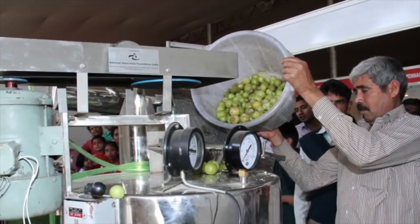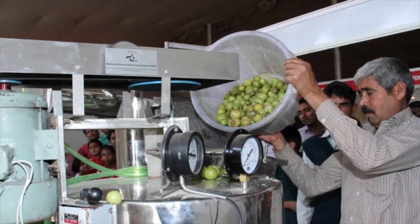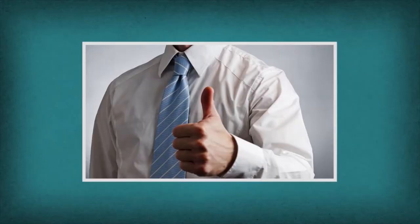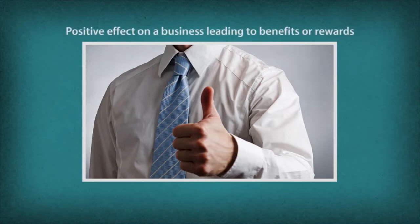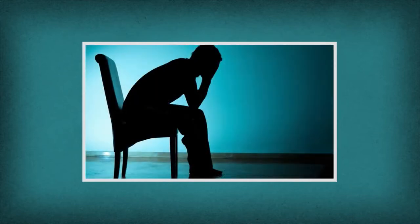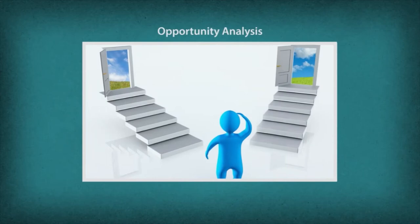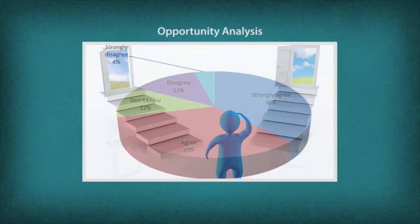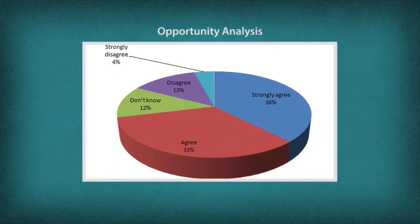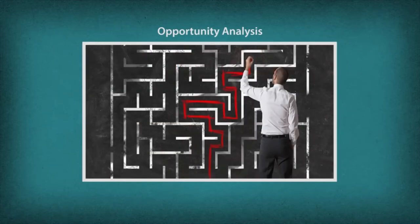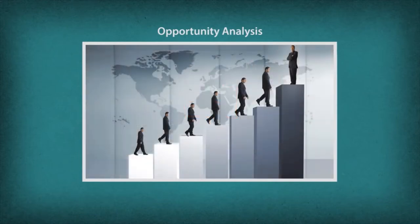A processed food entrepreneur creates and establishes a food processing unit by exploring the market, identifying an opportunity, and building on it. An opportunity is defined as an uncertainty that could have a positive effect on a business leading to benefits or rewards. If not availed at an appropriate time, it may become a threat as it may be harnessed by the competition. The first step in opportunity analysis is to prioritize available opportunities based on gross market potential, followed by targeting the identified market segment with appropriate marketing mix and strategy, involving decisions like product and service features, pricing, promotion, and distribution channels.